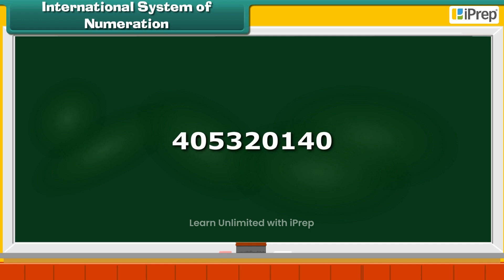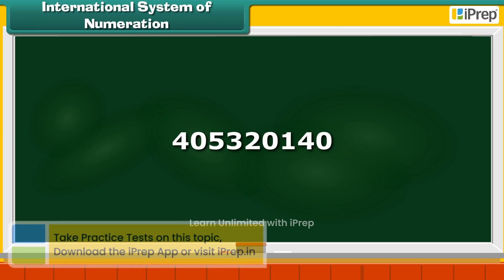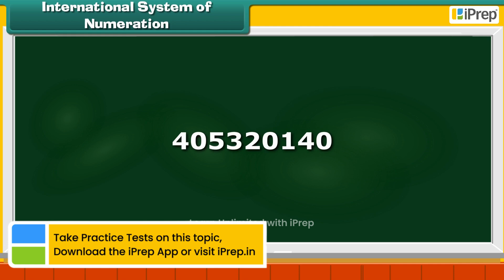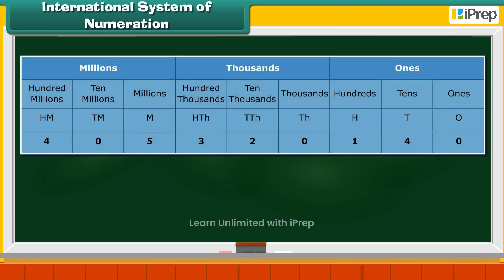Consider the number 40532014. First, we arrange it in the place value chart. Digit 4 appears at two places: Tens and Hundred Millions.